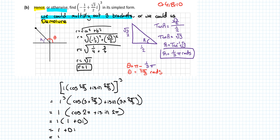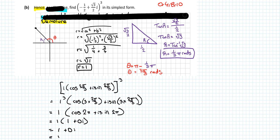We can look at the whole question — 'hence or otherwise'. So 'hence' is asking us to prove using De Moivre's theorem. 'Hence' means we can use De Moivre's theorem, or otherwise we don't have to. If it didn't say 'or otherwise' — if it just said 'hence' — you would have to use De Moivre's theorem. But it says 'or otherwise'.